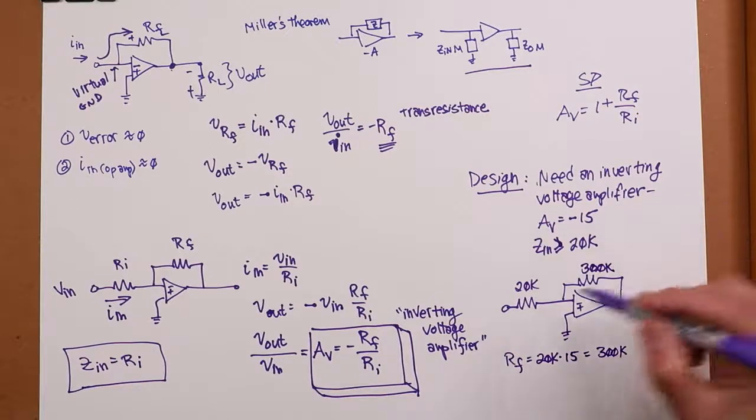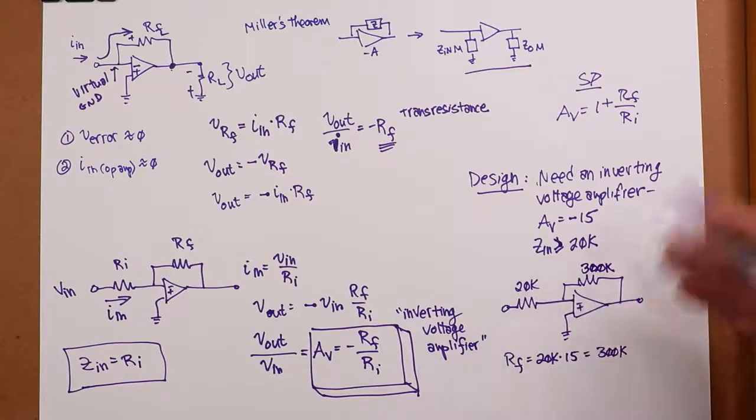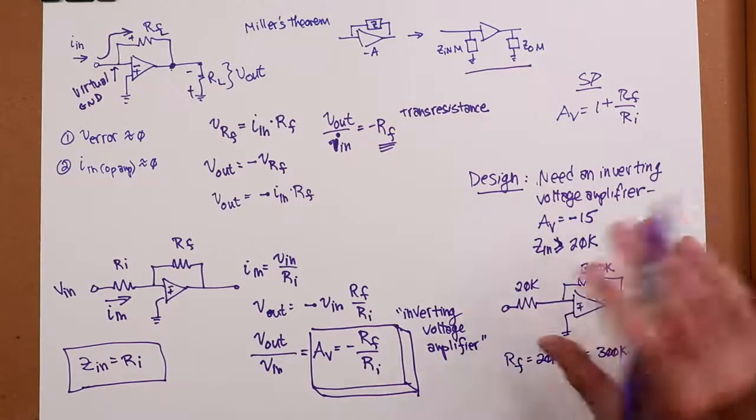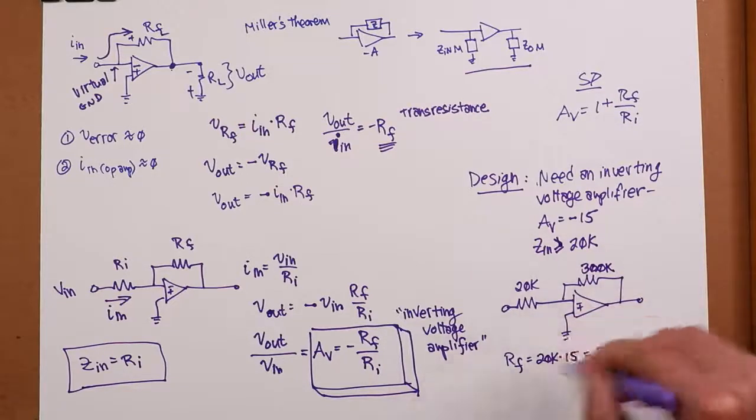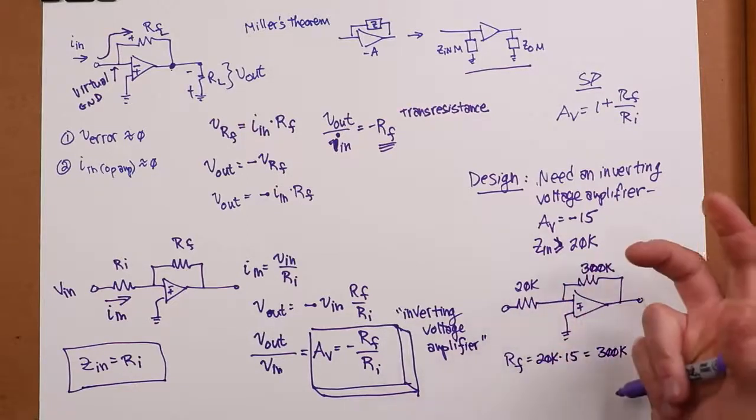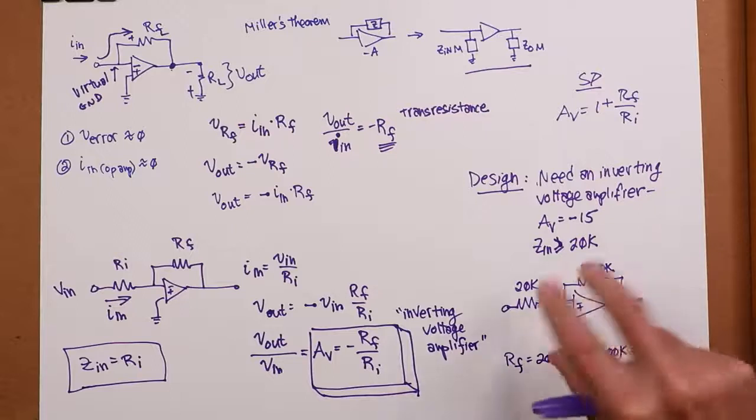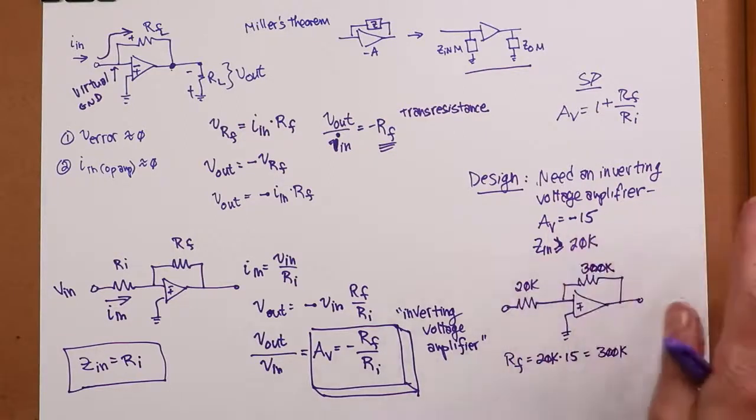Now, as you'll see in the future, if these resistors get too big, we're going to have other problems with noise and offset and drift and such. So we might do something a little bit different here. We might take the inversion part of the equation and do that separate from the gain part.